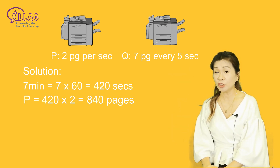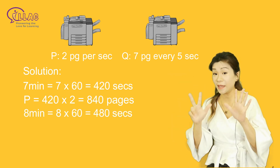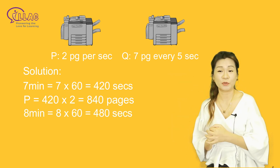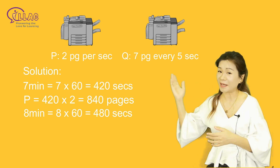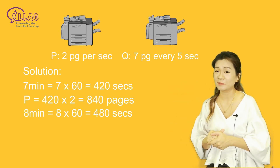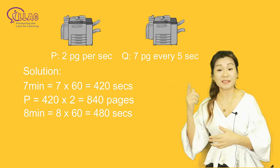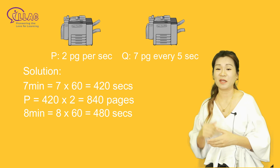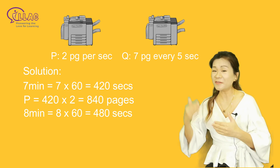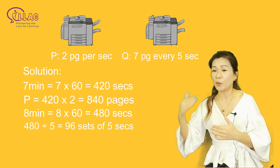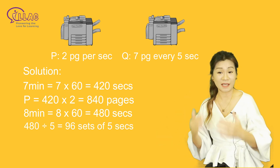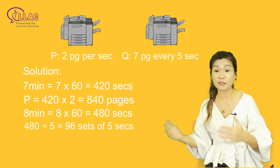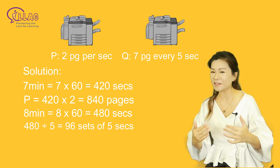Machine Q took 8 minutes to print part 2, which is equal to 480 seconds. Because 7 pages can be printed every 5 seconds, we need to find out how many sets of 5 seconds we have first.